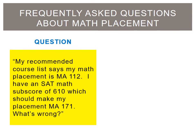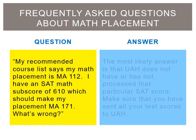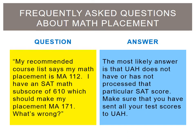My recommended course list says my math placement is MA 112. I have an SAT math subscore of 610, which should make my placement MA 171. What's wrong? The most likely answer is that UAH does not have or has not yet processed that particular SAT score. Make sure that you have sent all your test scores to UAH.